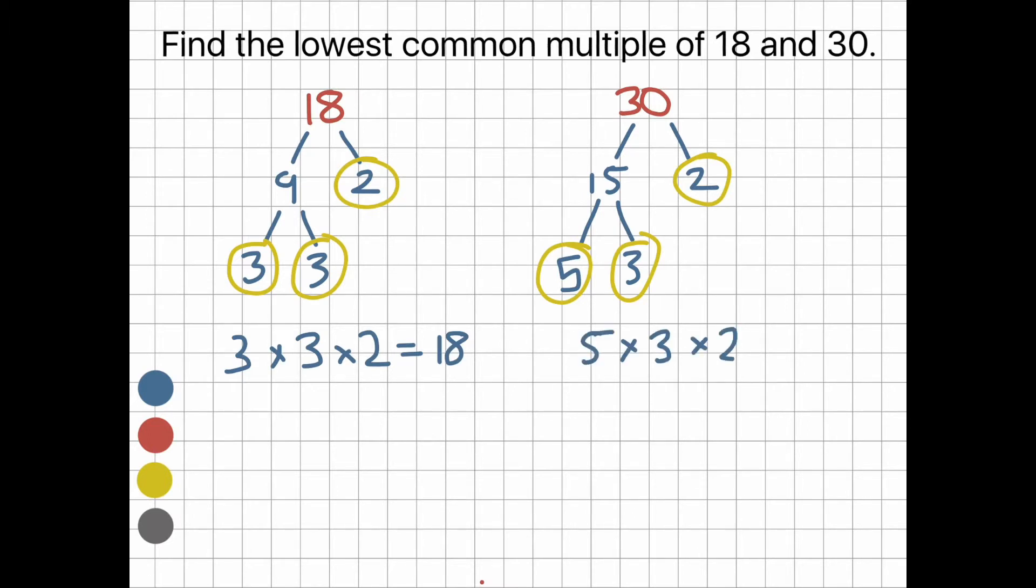And 5 times 3 times 2 is 30. Now let's find the lowest common multiple. Let's look at the prime numbers again. We have the number 2 in both.